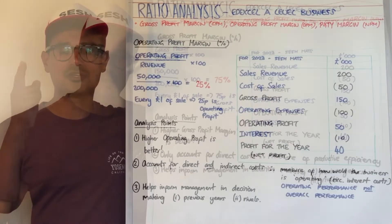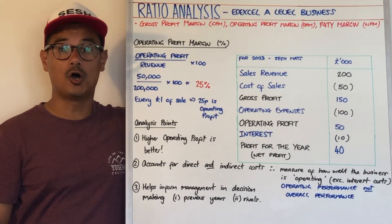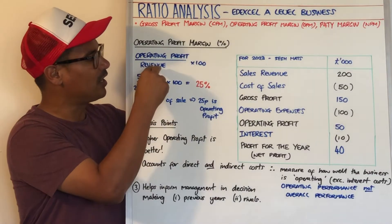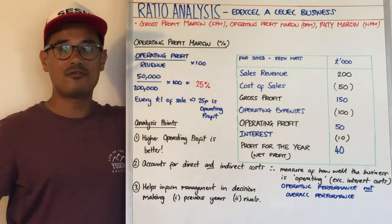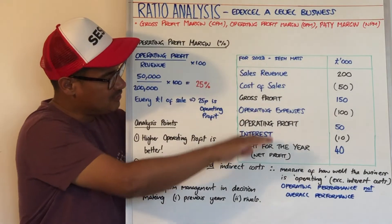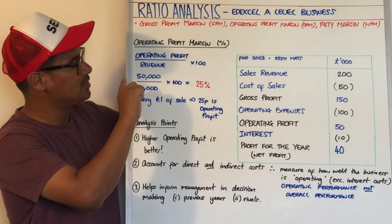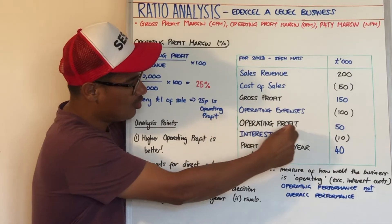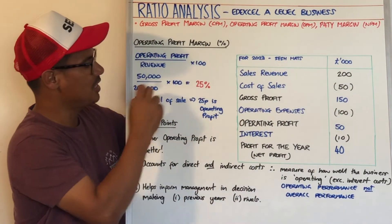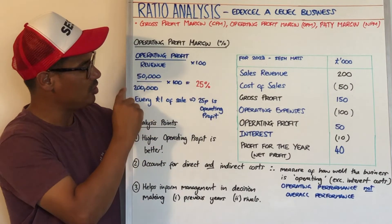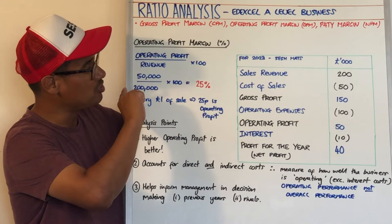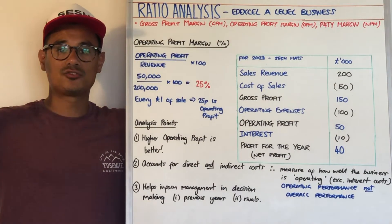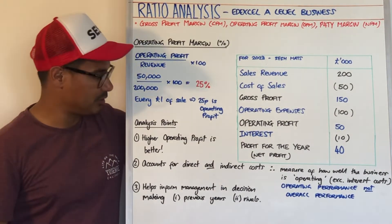Now let's look at operating profit margin. The formula is operating profit divided by revenue, times by 100. Using the statement of comprehensive income, the operating profit is £50,000 — you find that listed as operating profit. The revenue is £200,000, times by 100, which gives an answer of 25%, always expressed as a percentage.